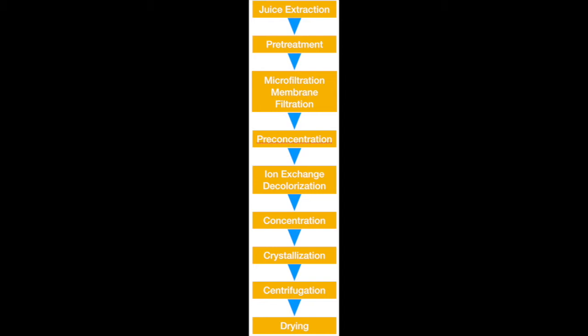Activated sugar decolorization process: Activated sugar bleaching systems basically have three ways: fixed bed, pulsating bed, and moving bed.